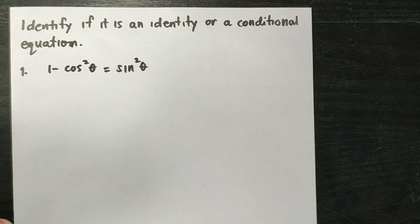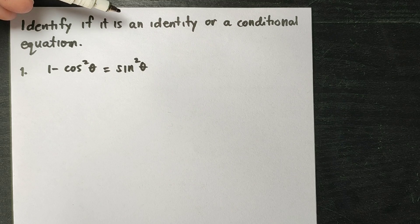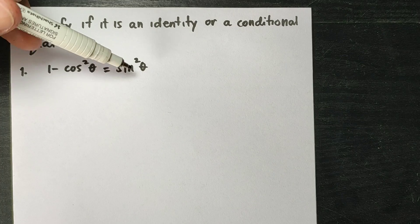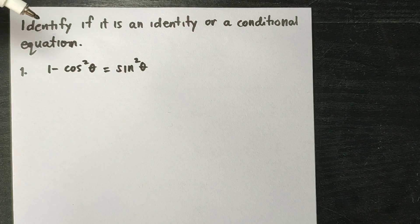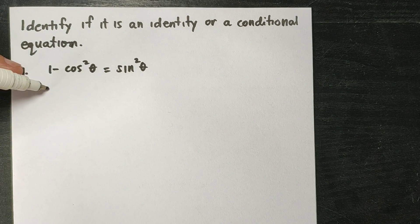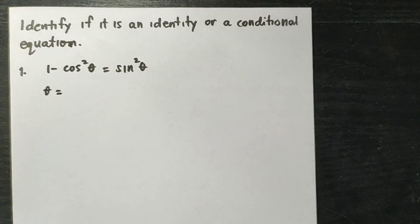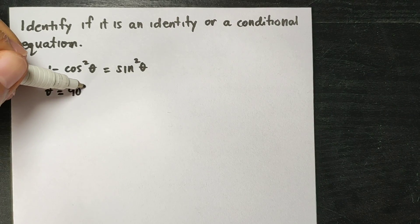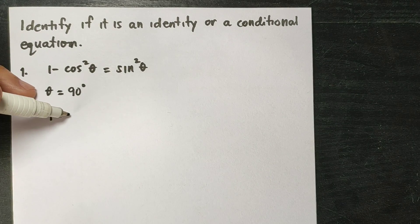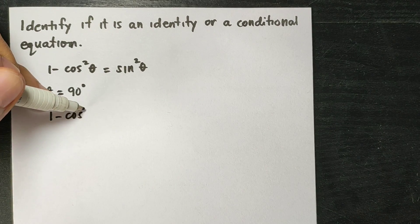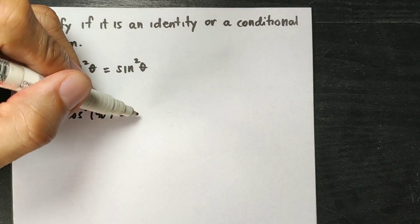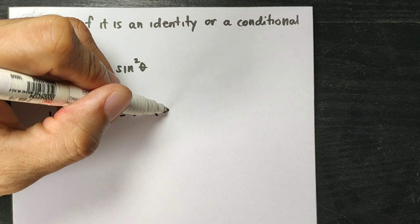Let us give more examples. Identify if it is an identity or a conditional equation. Number 1: we have 1 minus cosine squared theta equals sine squared theta. I am going to assign a value for theta — let's say 90 degrees or pi over 2. Substituting it into the equation: 1 minus cosine squared of 90 degrees equals sine squared of 90 degrees.